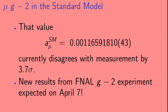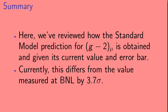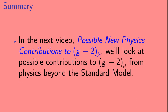To get the standard model prediction for A_mu, you total up the QED, electroweak, and hadronic contributions — the total is dominated by the QED corrections, but the uncertainty is essentially the same as the hadronic uncertainty. That value currently disagrees with measurement by 3.7 sigma, and new results from the Fermilab G-2 experiment are expected on April 7th. In the next video, 'Possible New Physics Contributions to Muon G-2,' we'll look at possible contributions from physics beyond the standard model.